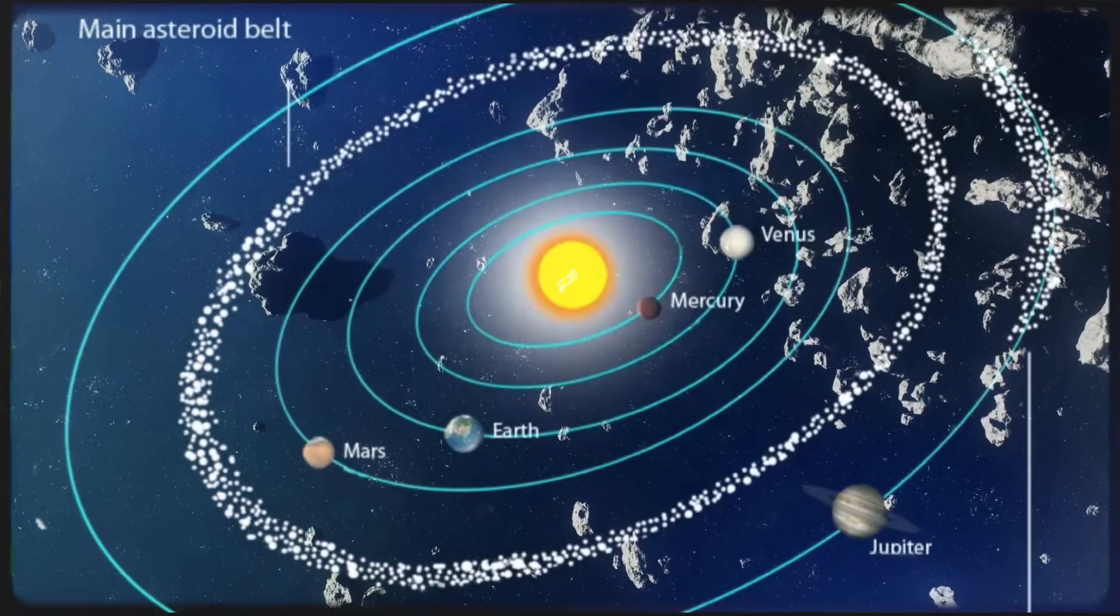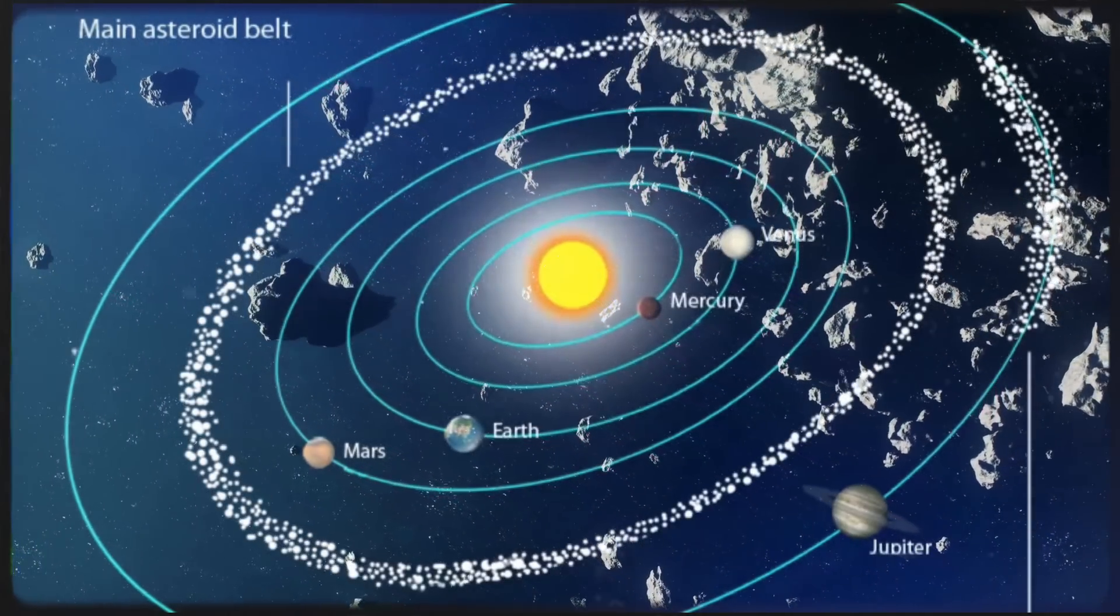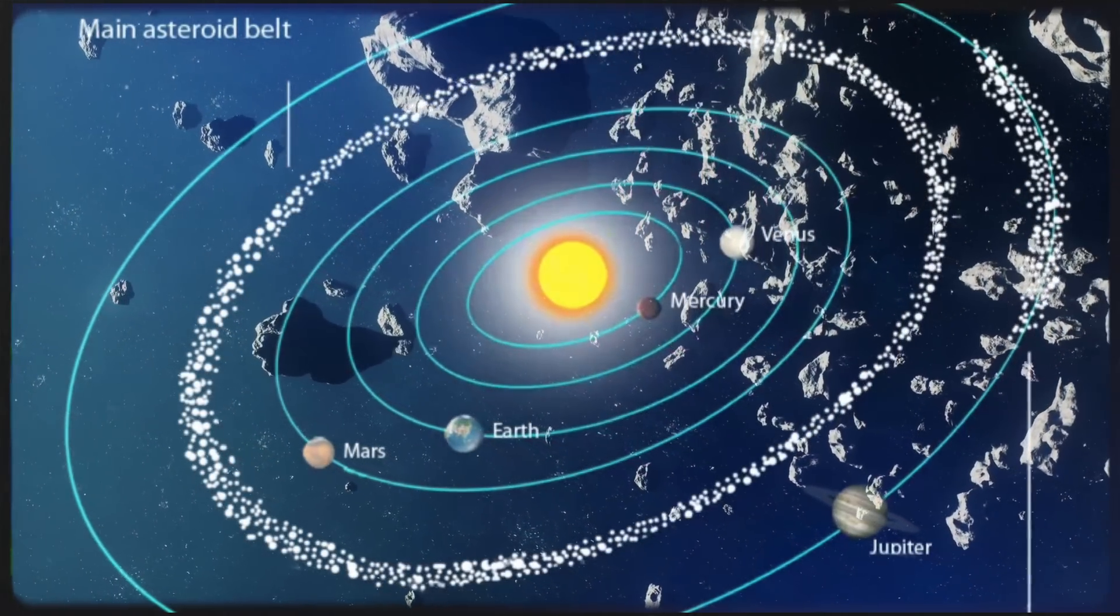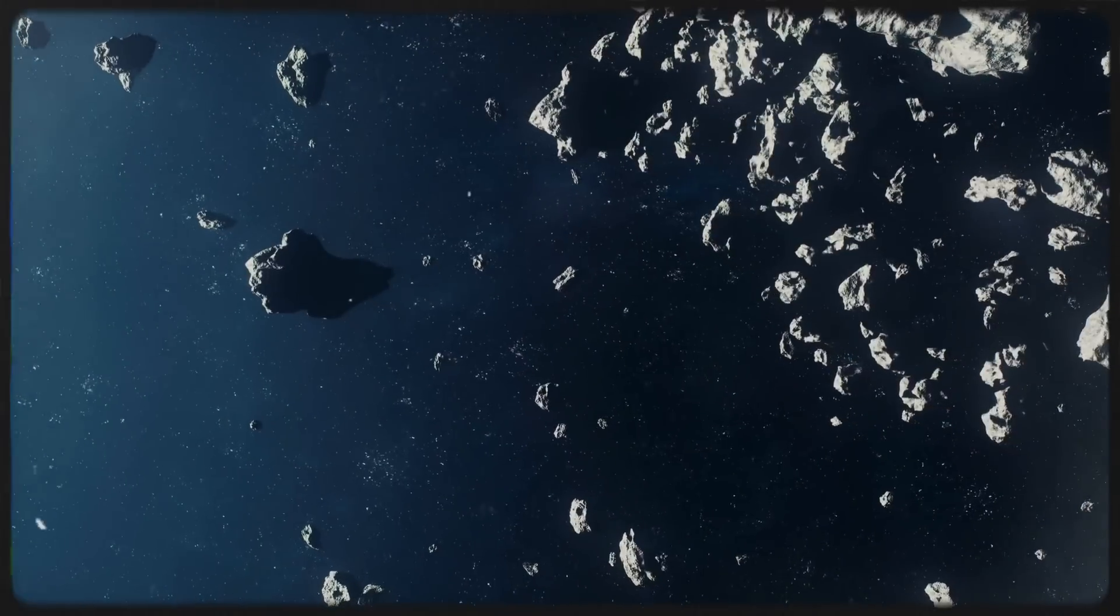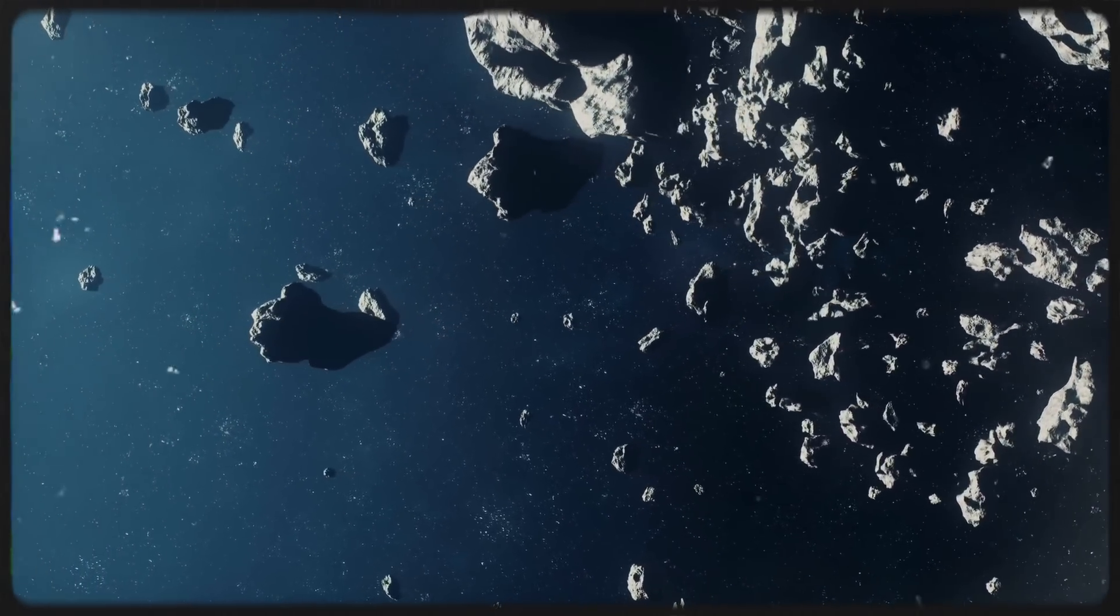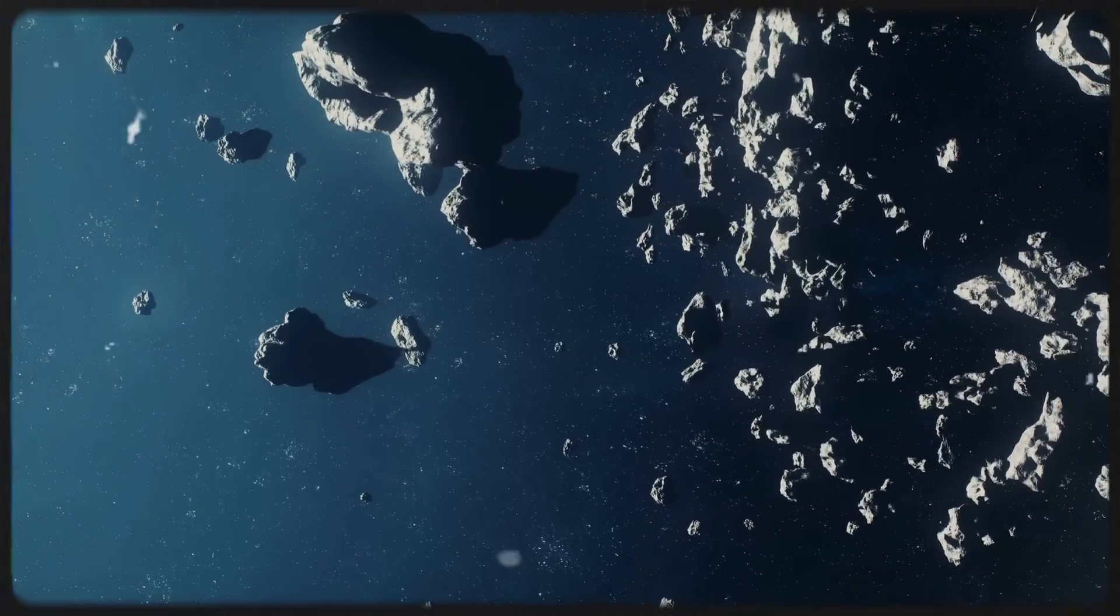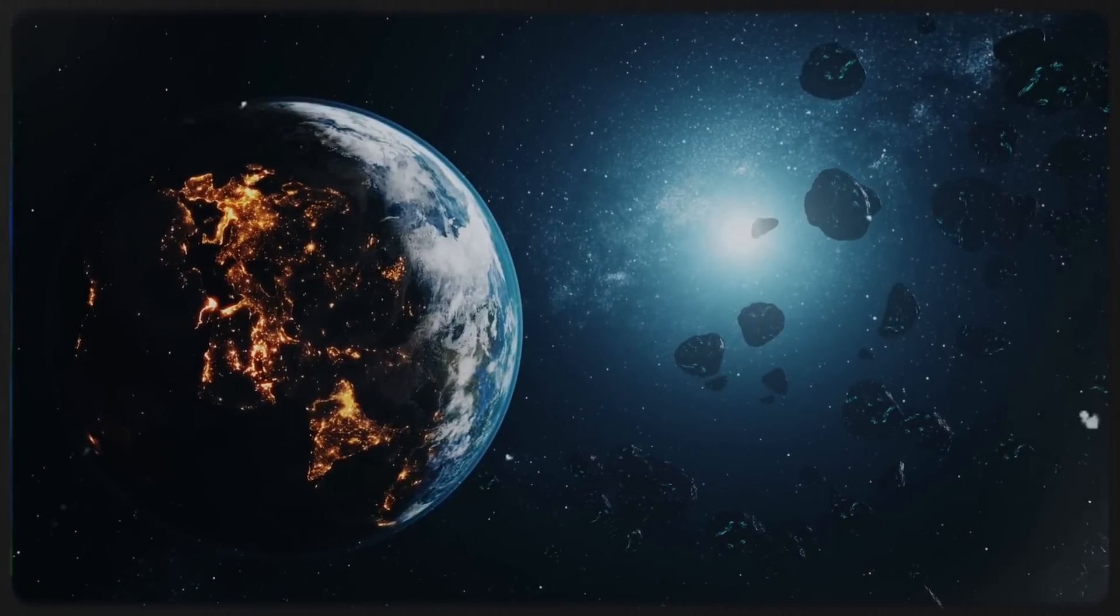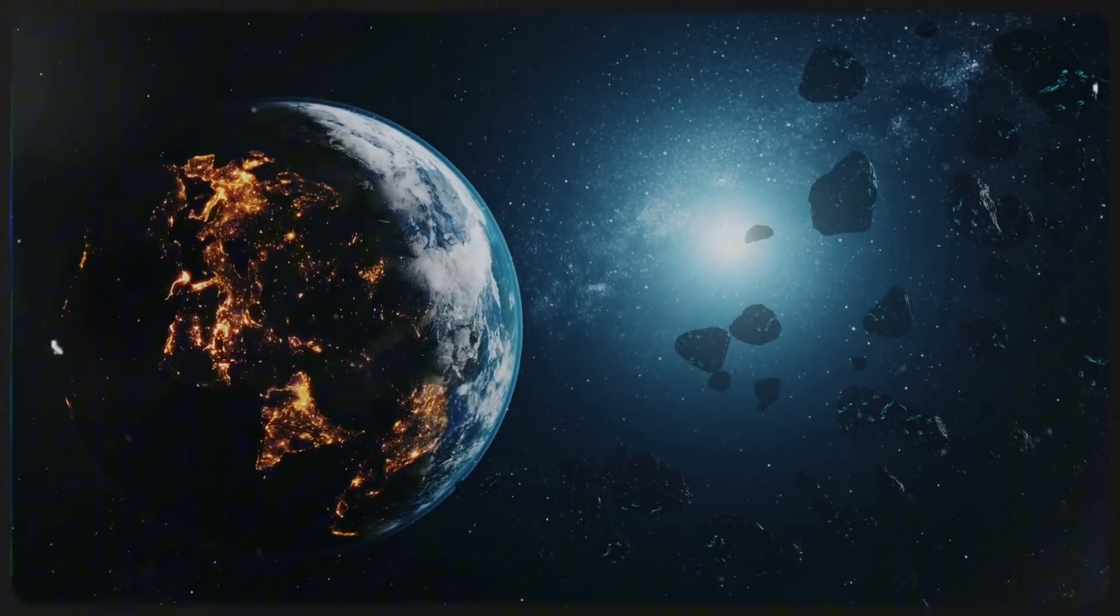Closer to our cosmic neighborhood, the telescope detected a small asteroid in the main belt between Mars and Jupiter. While not particularly remarkable on its own, this detection demonstrates the instrument's ability to track small celestial bodies, an important capability for monitoring potential Earth-bound asteroids.